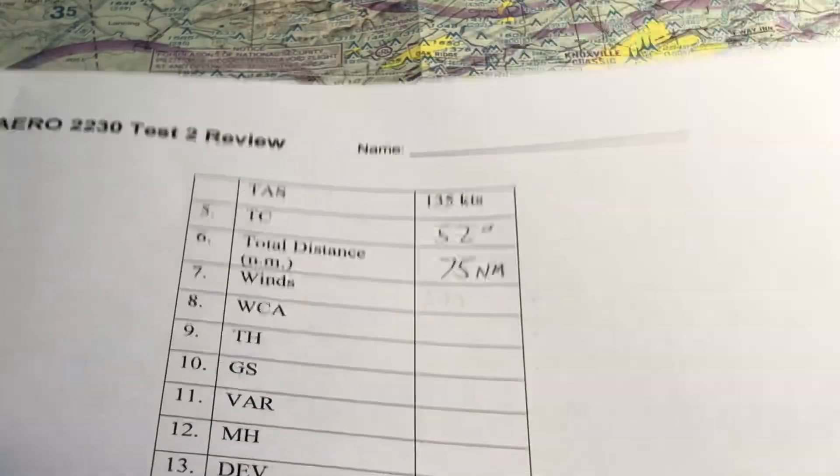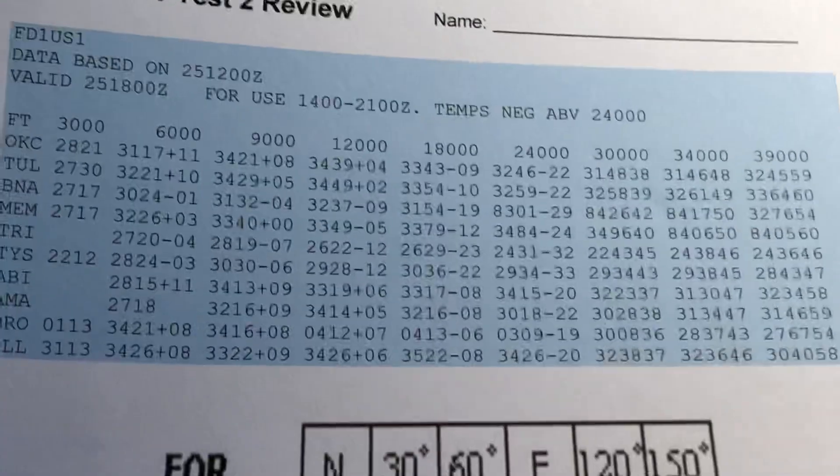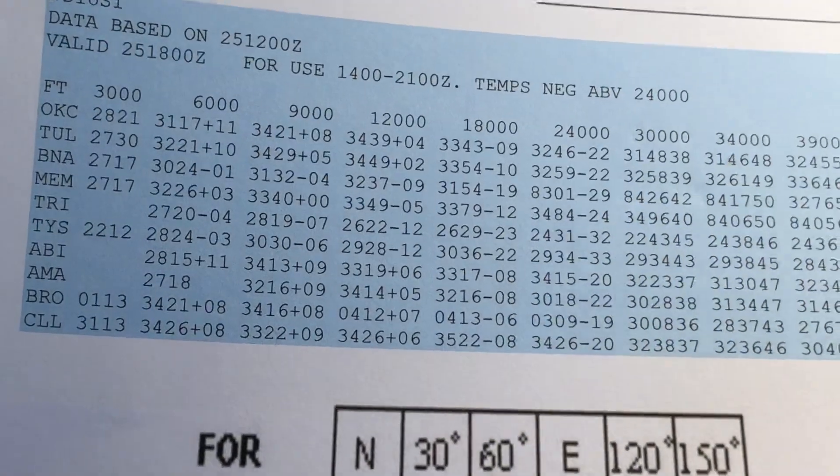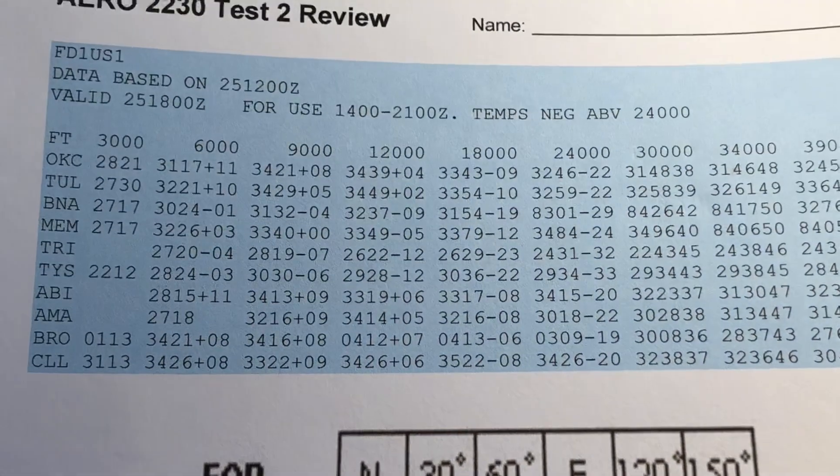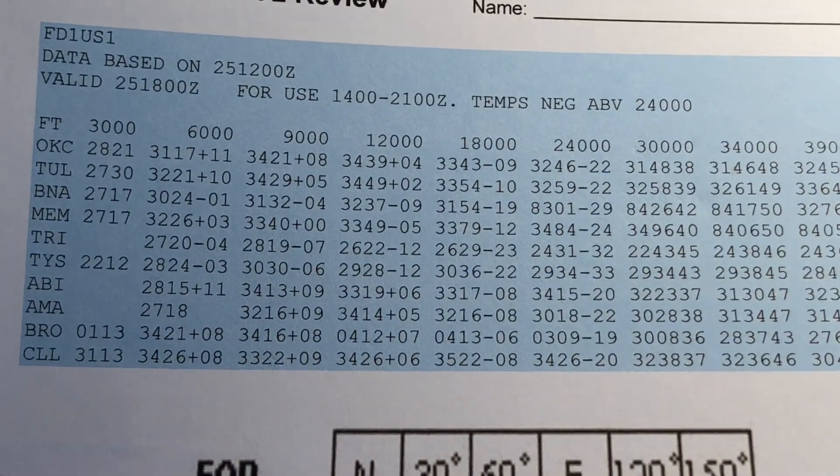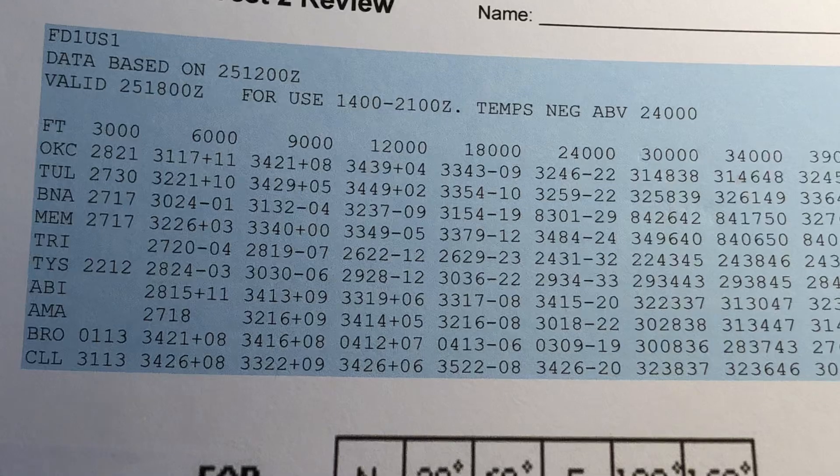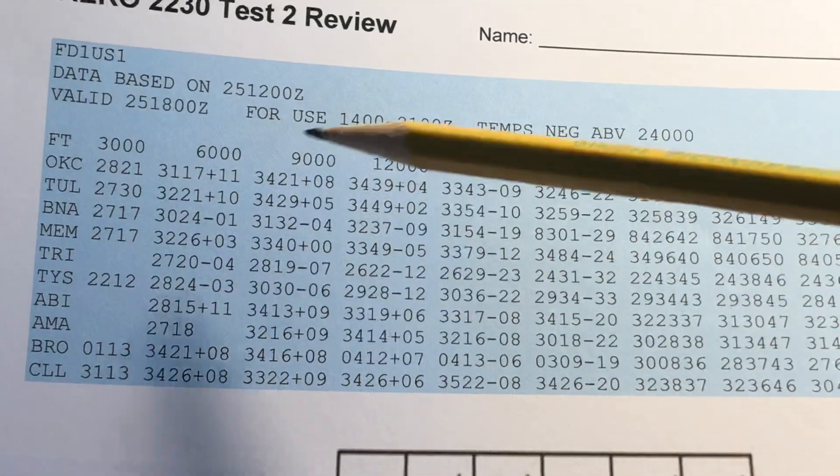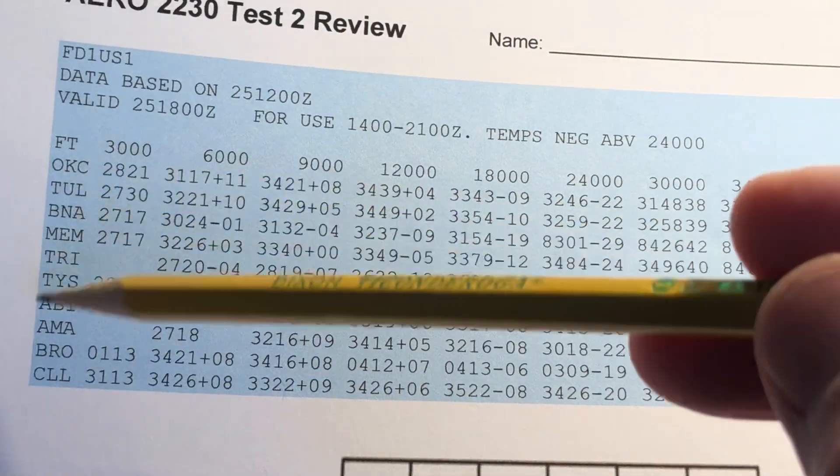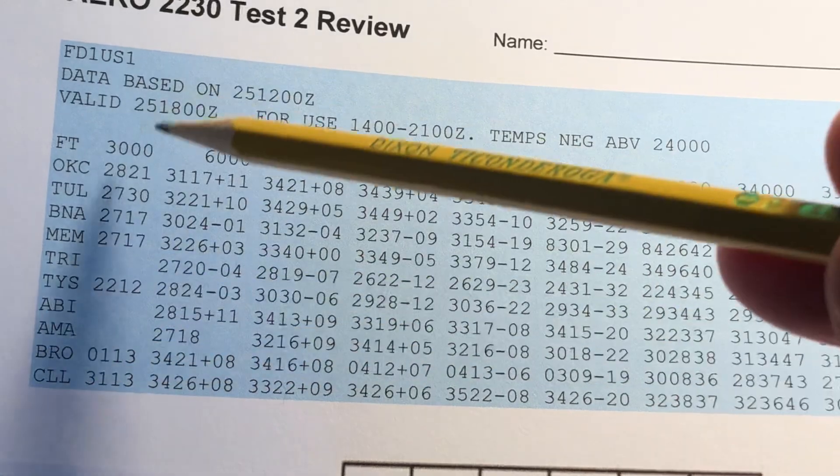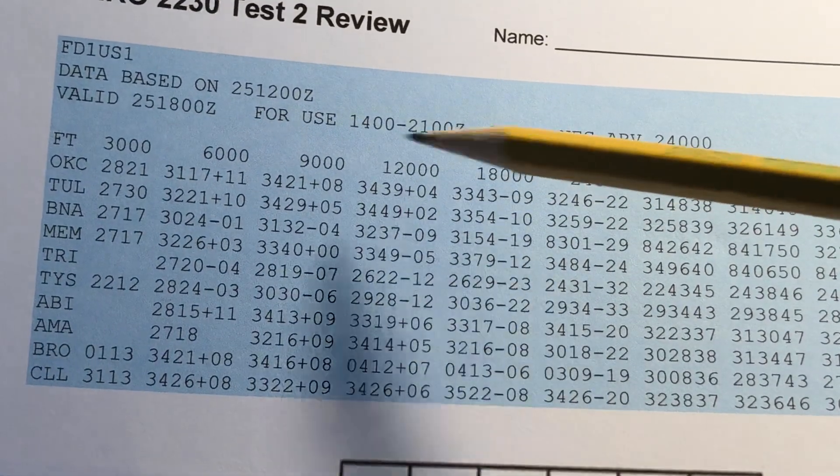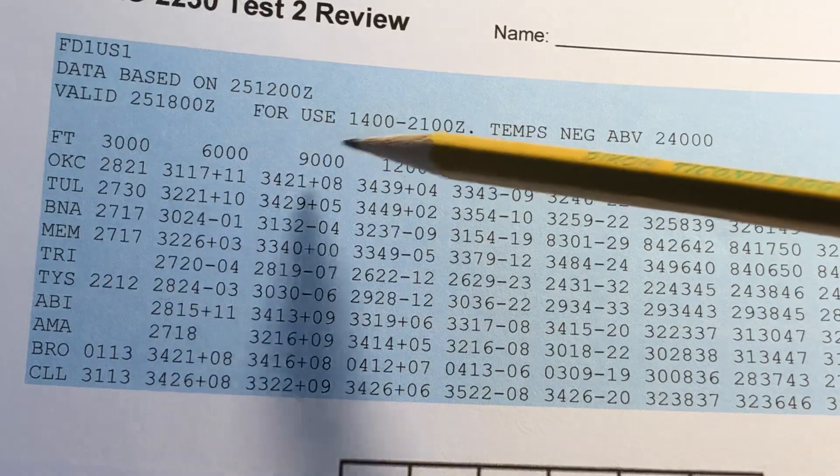So the first thing we need to do is look at the winds aloft forecast and we can get this from aviationweather.gov. There are several sources for these forecasts and as you can see on the left side here we have different stations and at the top we have different altitudes in 3,000 foot increments.